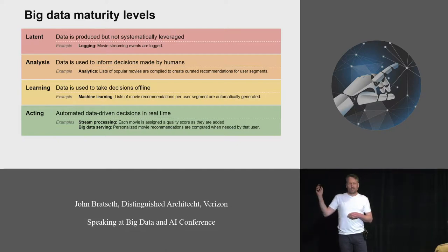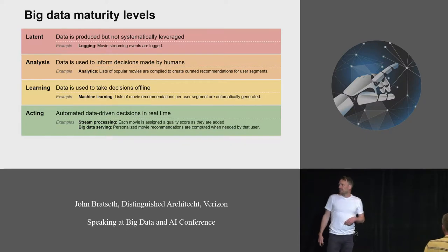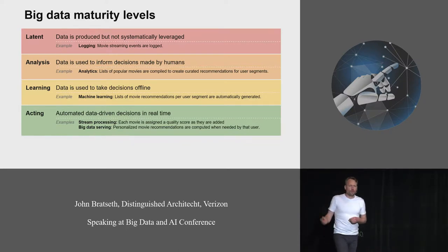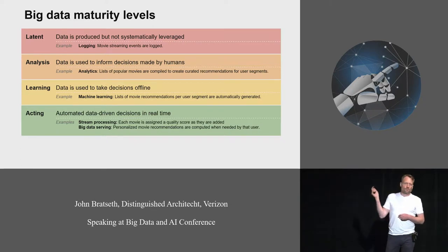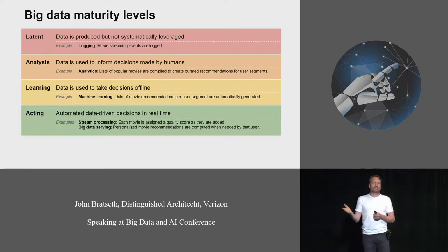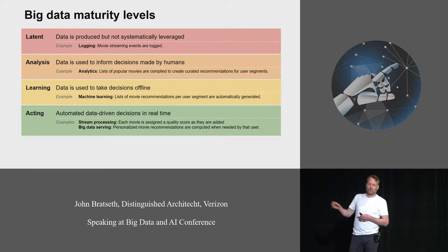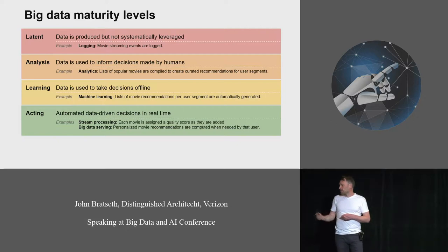Then we get to the analysis stage where the data is used to inform decisions made by humans. For example in the movie streaming case, it would be looking at who is watching what kind of movies and producing reports that are shown to editors who can then curate lists of recommendations for the users.